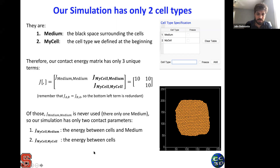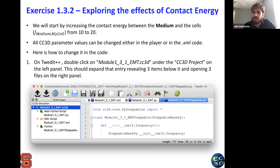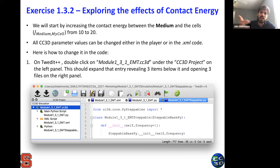Now try decreasing the contact energy between medium and myCell even further — to values lower than 5, like 3. What do you expect to happen? Type in the chat what you expect before running the simulation. You should see something that looks more or less like what I have on my screen: at the beginning, you see a lot of cells detaching, and progressively they detach more and more and eventually you have the spreading of all the cells in the medium. If you got something that looks completely different, please raise your hand and someone will help you.